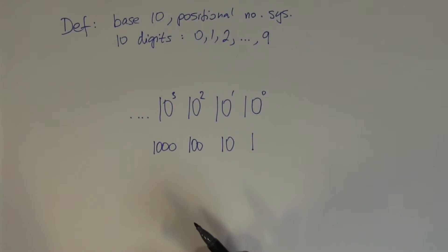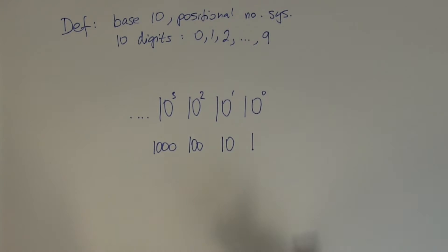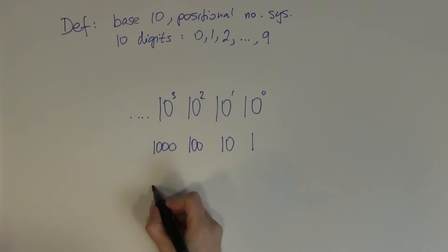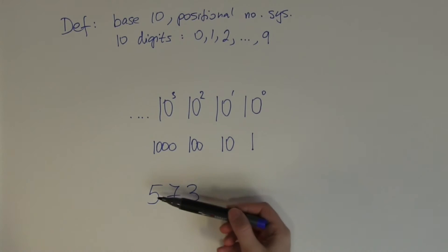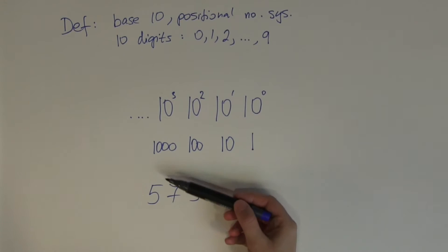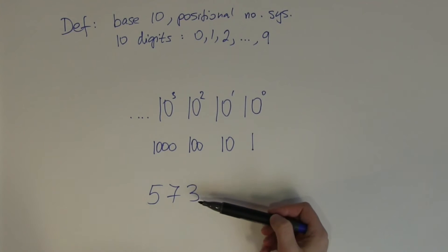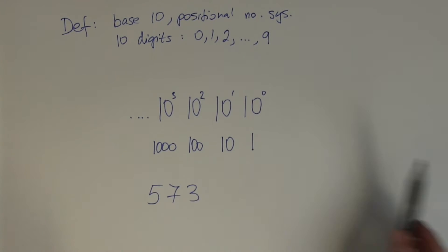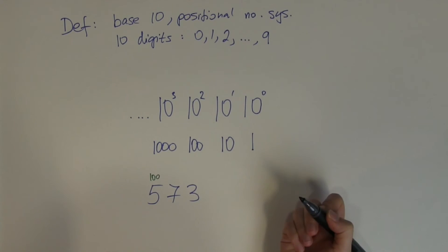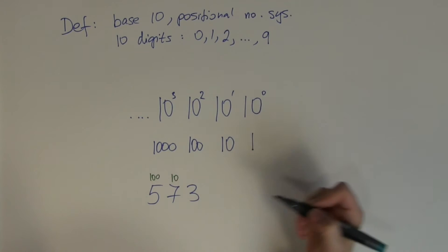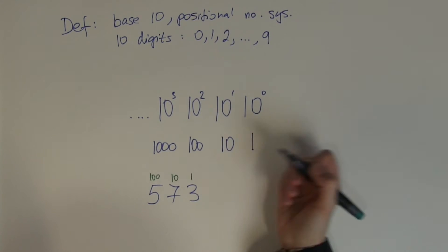It might seem a little overcomplicated, but this is already built into the way we read numbers. For example, if you read out 573, you naturally talk about decimal place values: five hundred seventy-three. The 'five hundred' tells you that 5 is at the hundreds place, the '70' tells you that 7 is at the tens place, and the 3 tells you that 3 is at the units place.